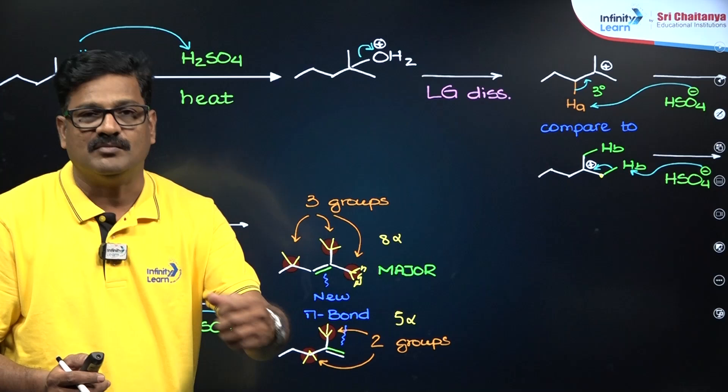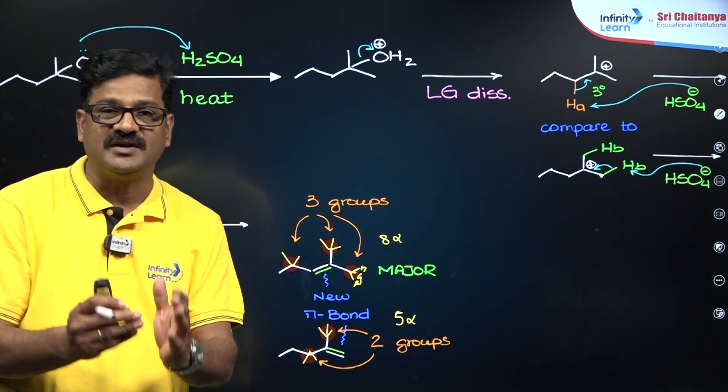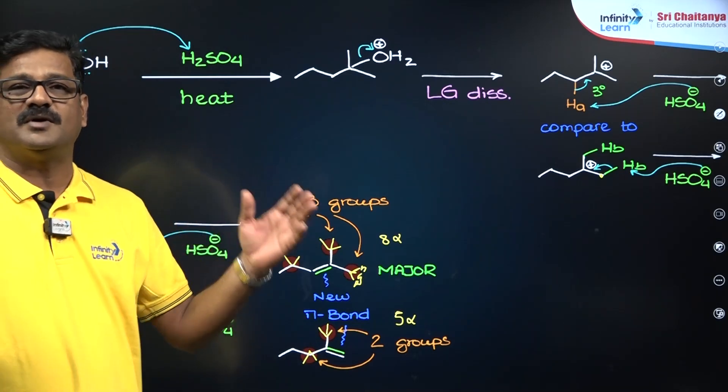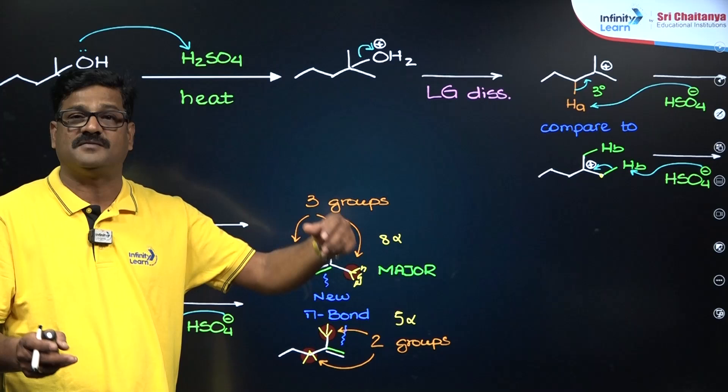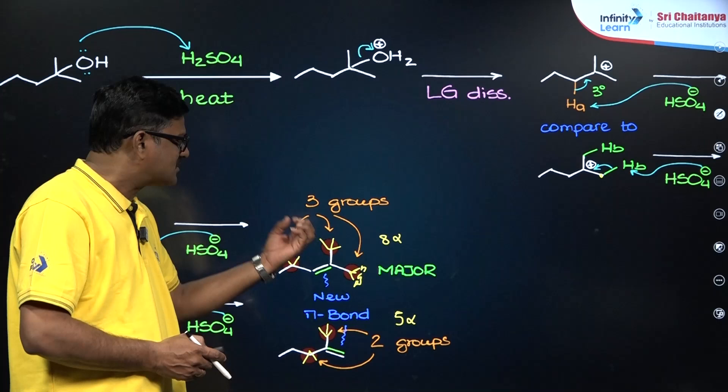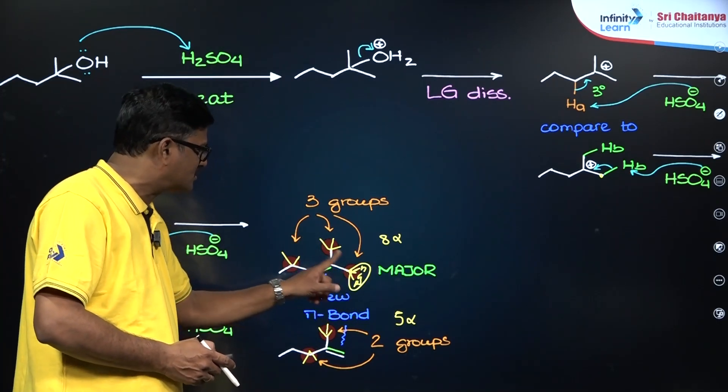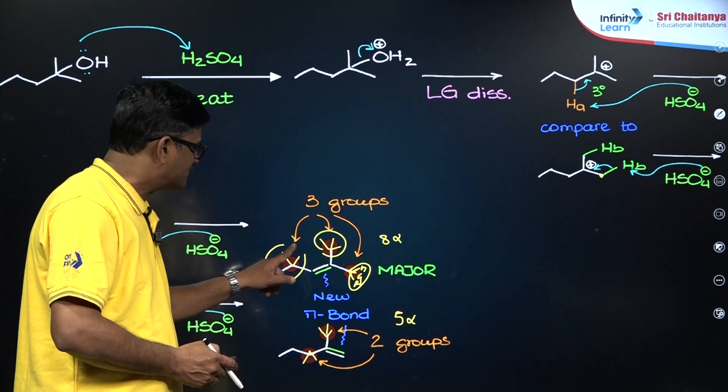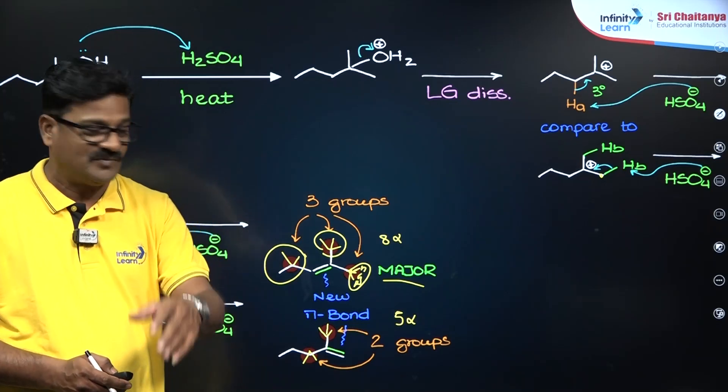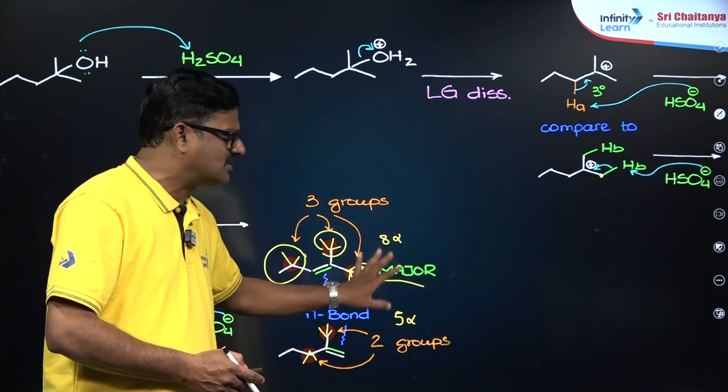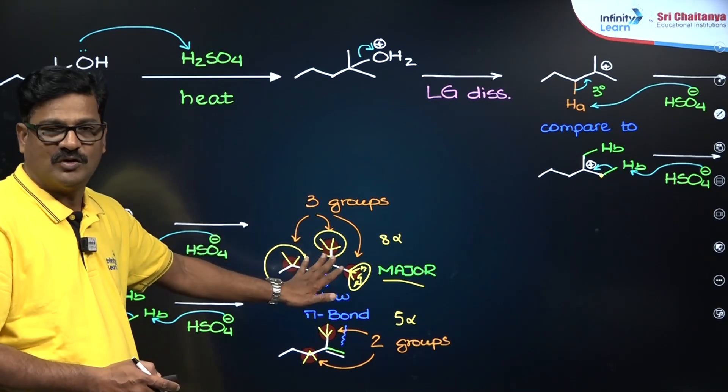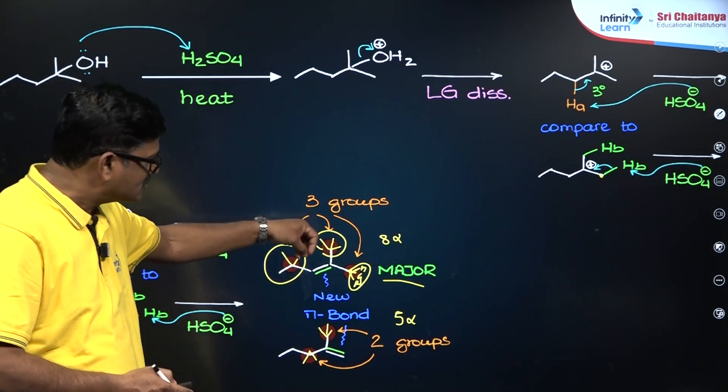More the number of alpha hydrogens, more will be the hyperconjugation. The stability of alkene is attributed to the hyperconjugation extent. More the number of alpha hydrogens, more will be the number of hyperconjugation structures, more is going to be the stability. In general, you can say this is more substituted alkene. This is a substitution, and this is a substitution, and here it is a substitution. More substituted alkene is going to be more stabilized. As a result, this is going to be major and it is less substituted, obviously it is supposed to be minor. So major product is going to be the more substituted alkene.